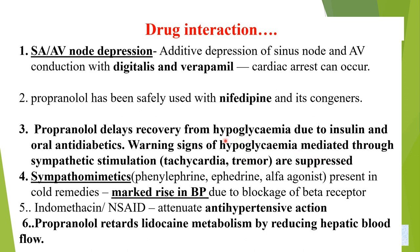Sympathomimetic drugs like phenylephrine, epinephrine, and alpha-agonists can cause a marked rise in blood pressure when combined with beta blockers, since beta-2-mediated vasodilation is blocked, leaving unopposed alpha-mediated vasoconstriction. Indomethacin and NSAIDs attenuate the antihypertensive action of beta blockers. Propranolol retards lidocaine metabolism by reducing hepatic blood flow.